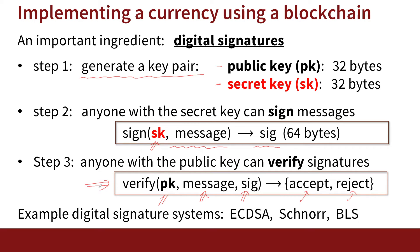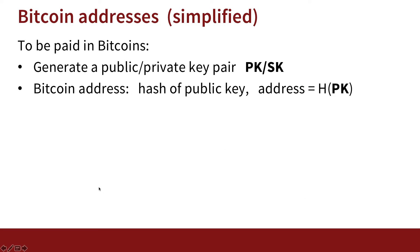Using this digital signature allows us to implement the currency. You can think of a digital signature as the real-world analog where you sign a document, and then anyone in the world can verify that you actually signed it. To receive Bitcoin, you generate a public-private key pair for a digital signature scheme on your own machine. That public key corresponds to what's called a Bitcoin address — you take the public key, hash it, and the address becomes 32 bytes of data.